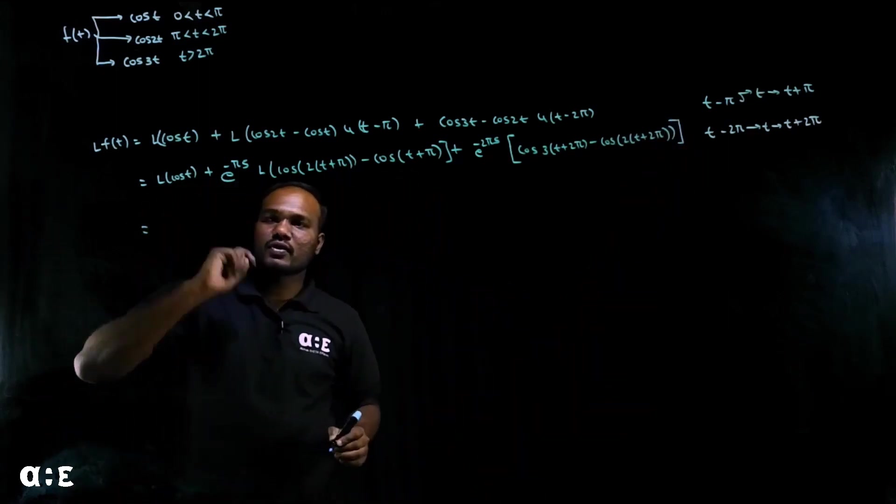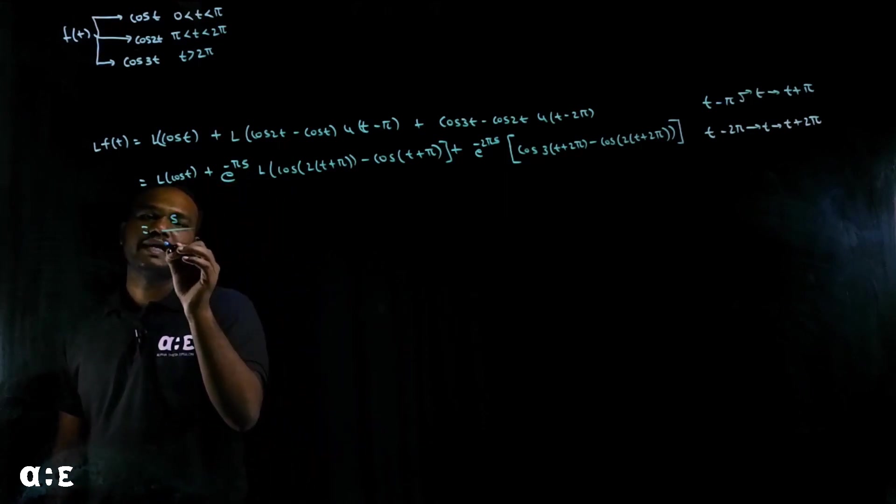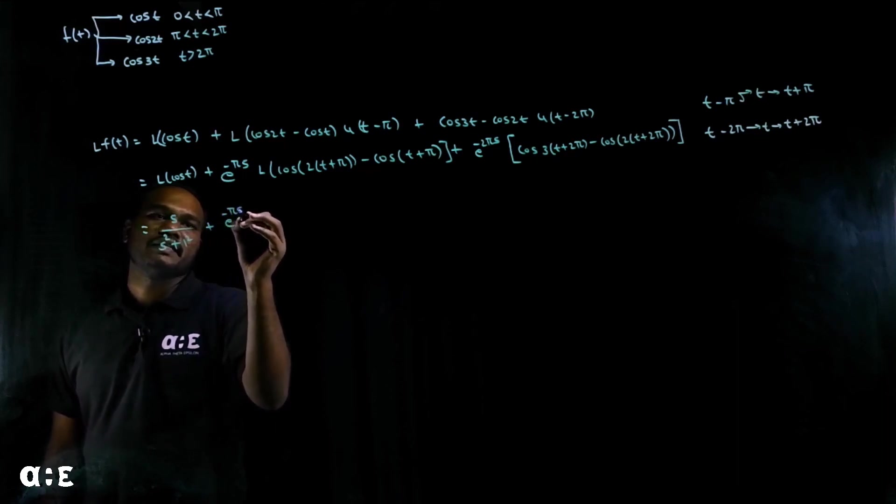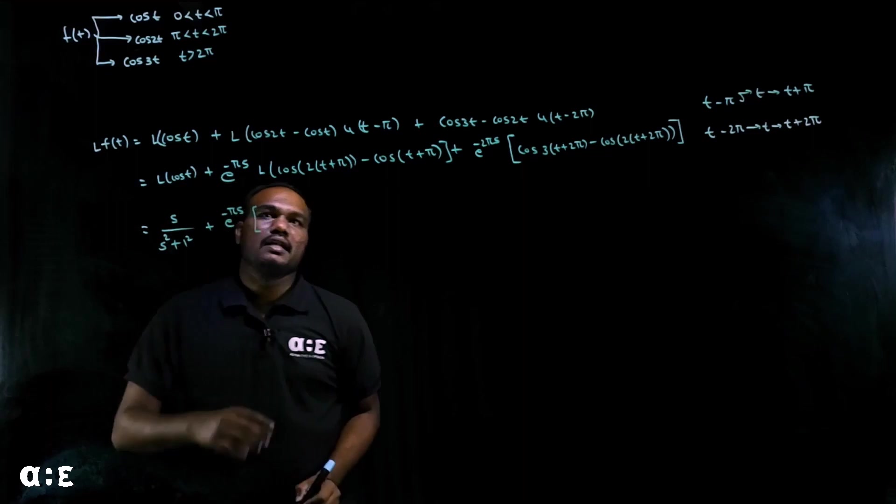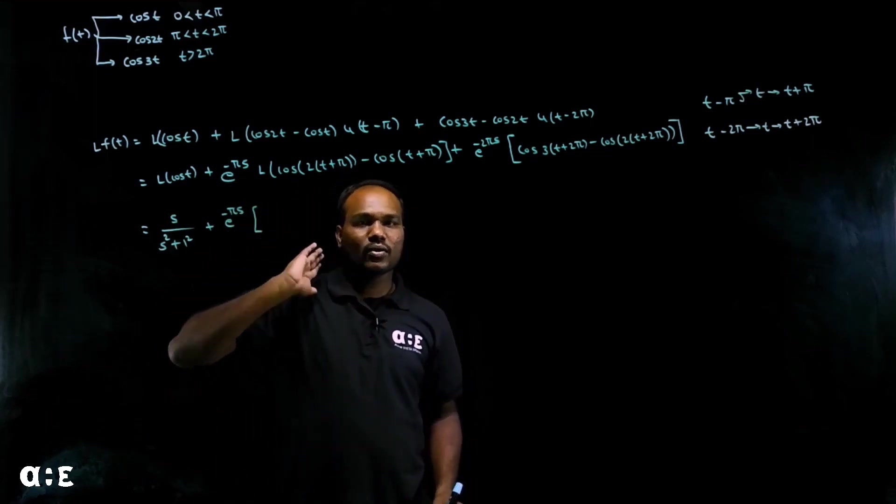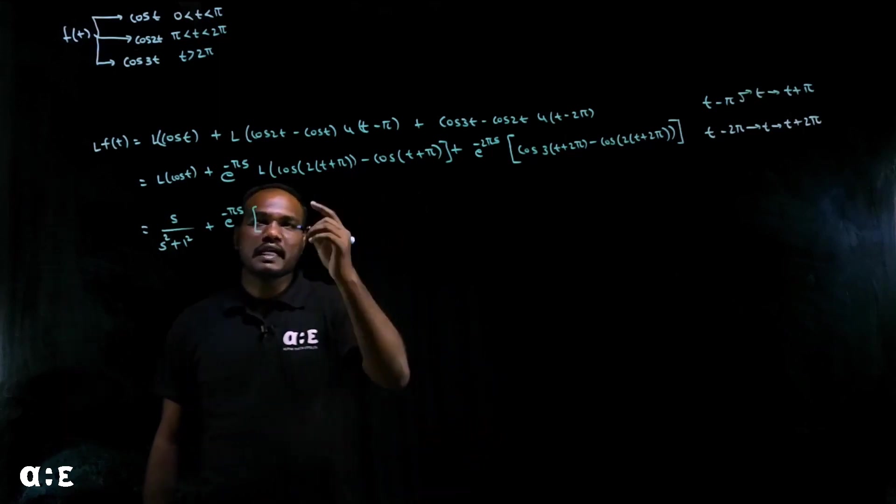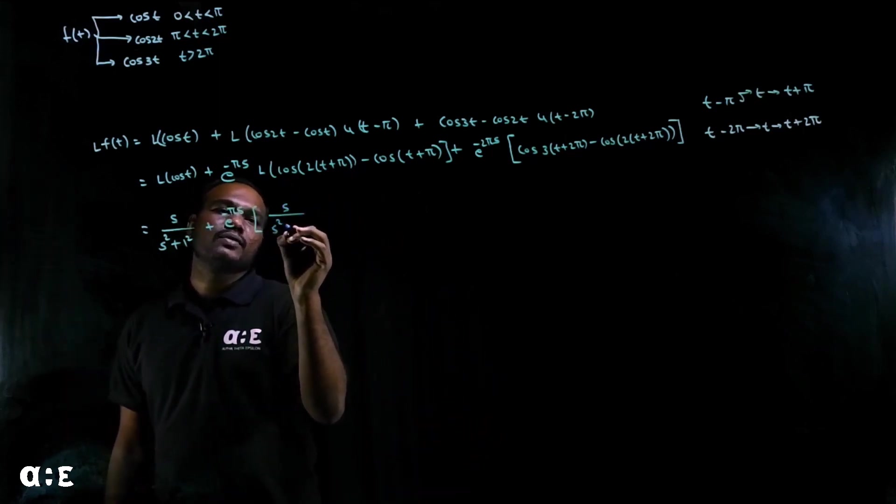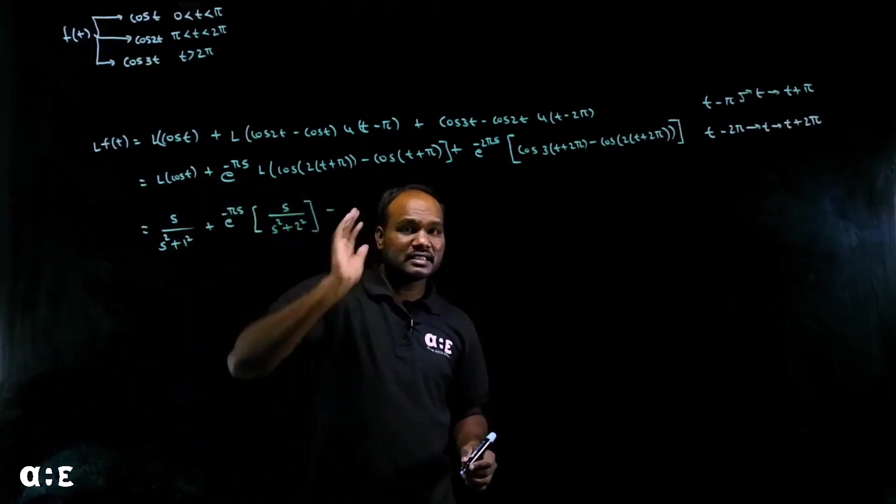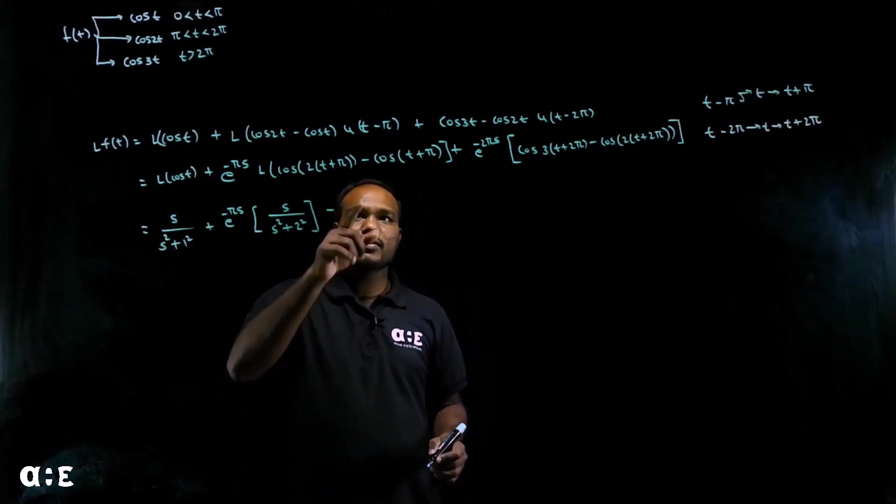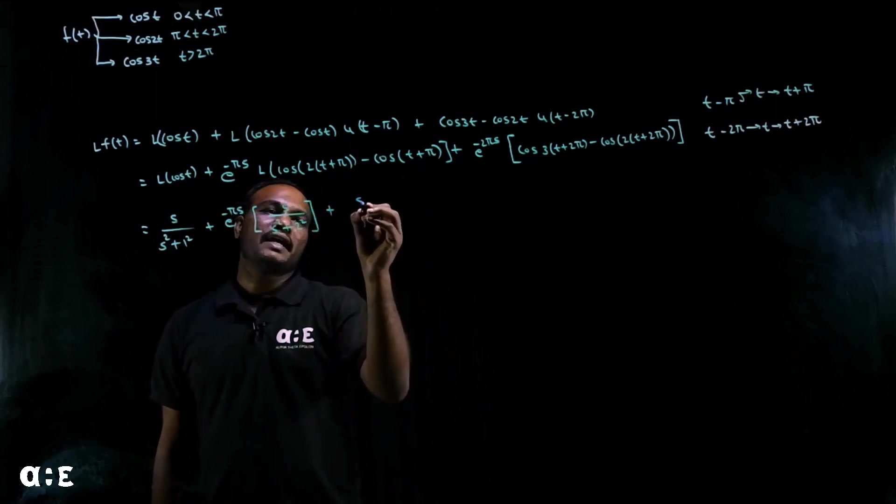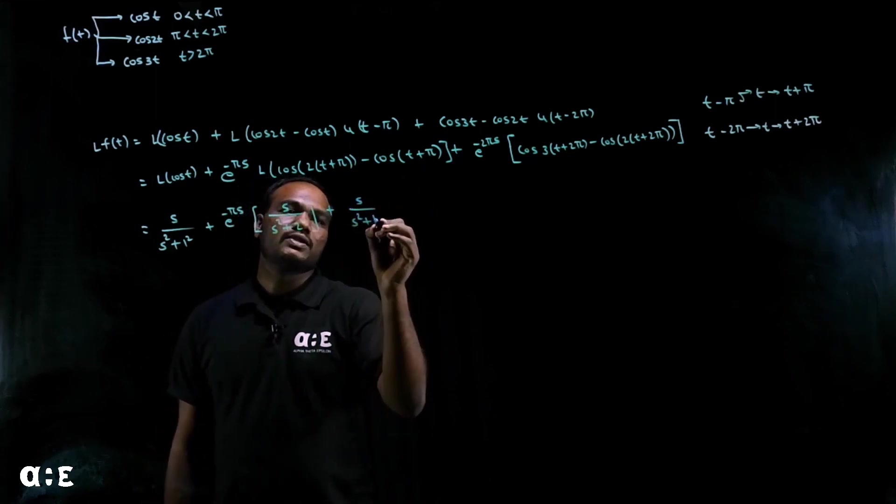Now we know Laplace of cos T is s/(s²+1). But also e^(-πs). Laplace of cos 2π plus 2θ is cos 2θ. Laplace is s/(s²+2²). Minus, cos π plus θ is third quadrant, cos is negative, so I'll take positive here. Then cos T Laplace is s/(s²+1²).